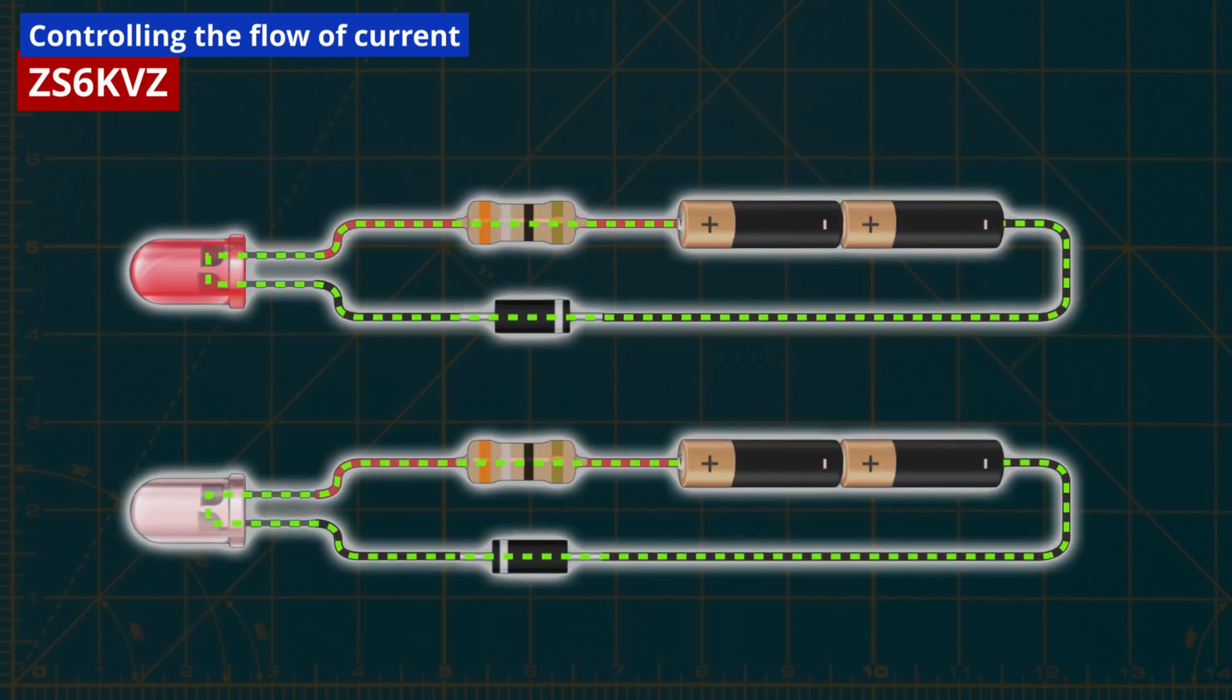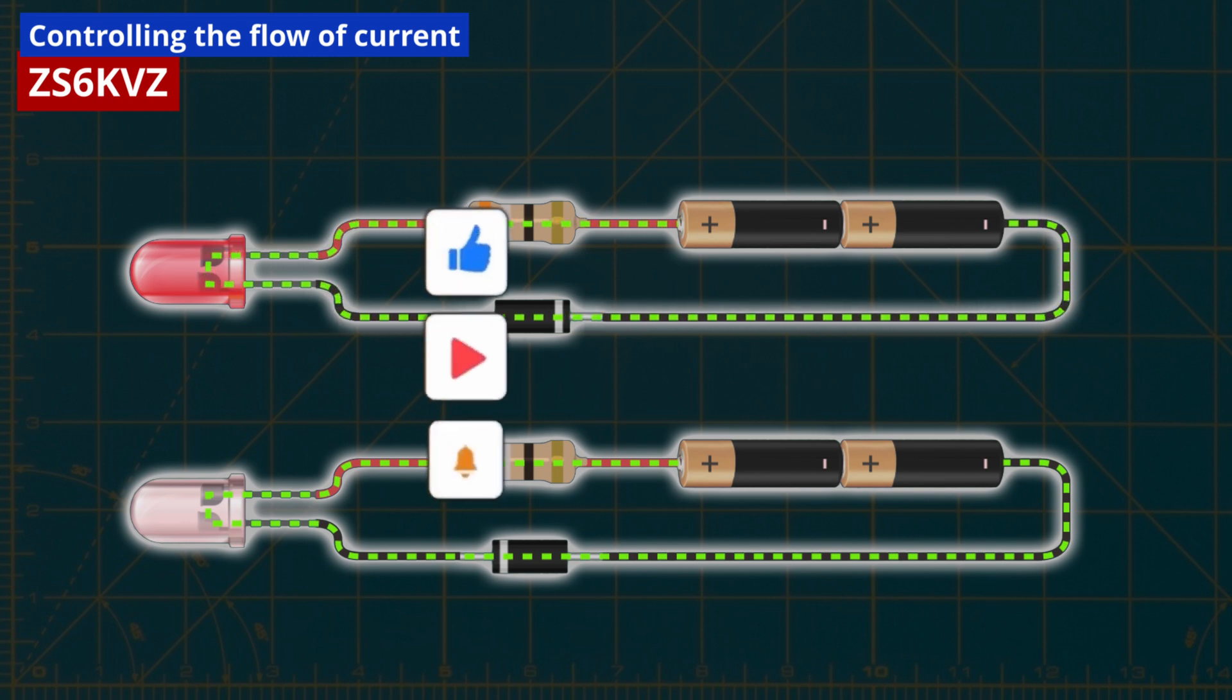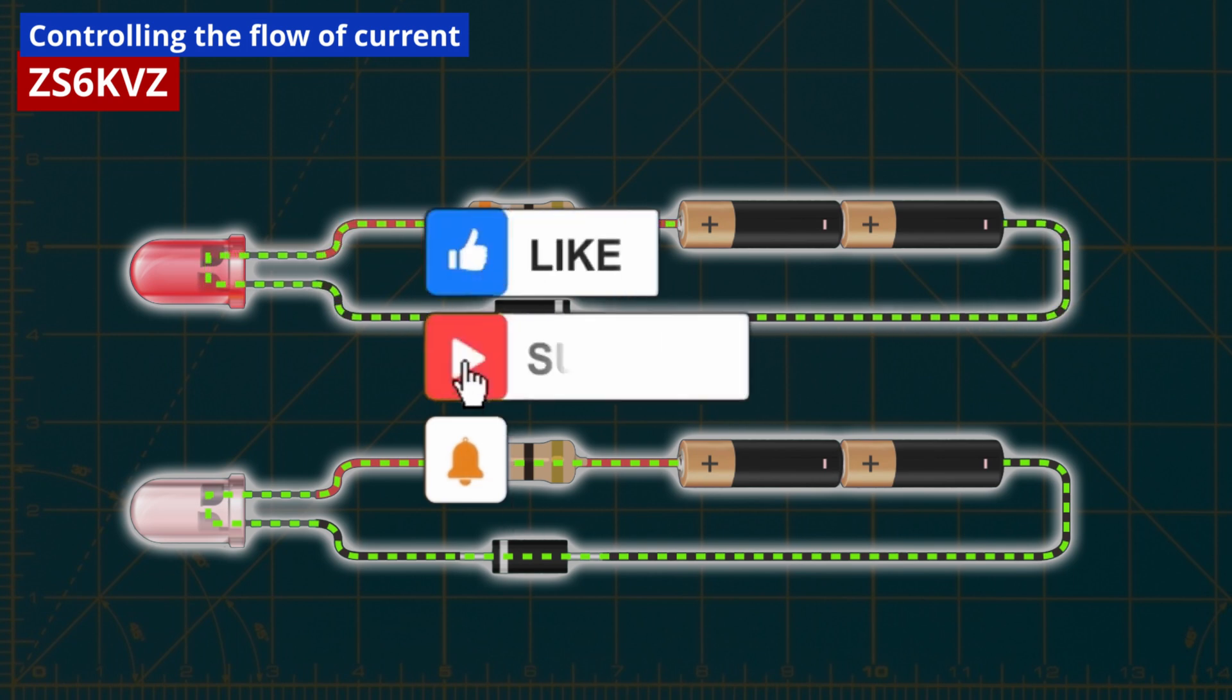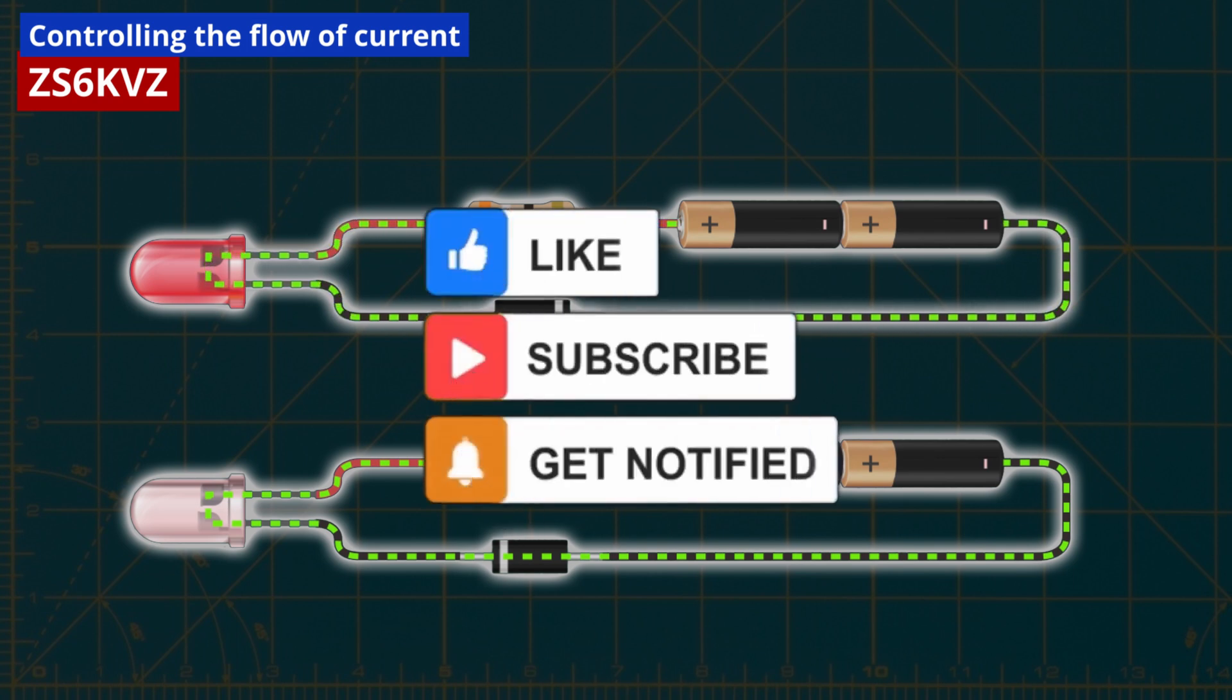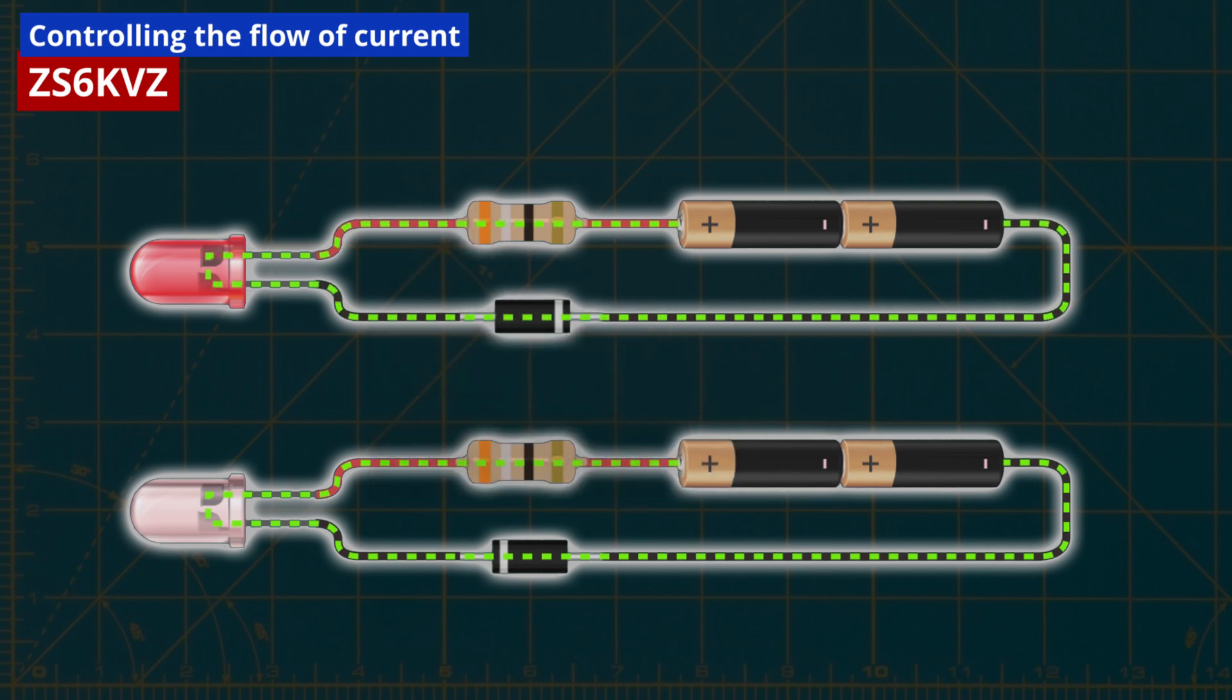When we connect the diode in a simple LED circuit like the one shown, we observe that the LED only turns on when the diode is installed correctly. This is because the diode allows current to flow in only one direction. Depending on how the diode is installed, it acts as either a conductor or an insulator.